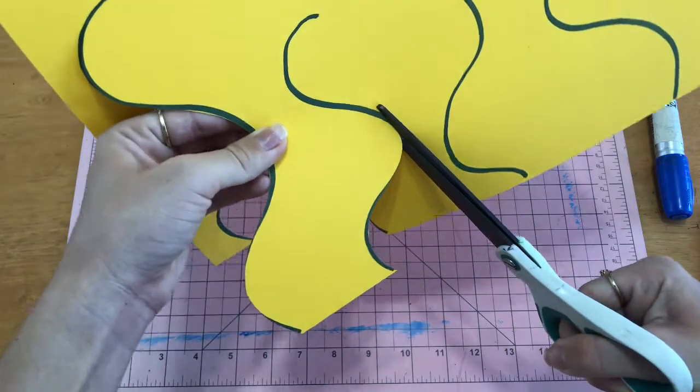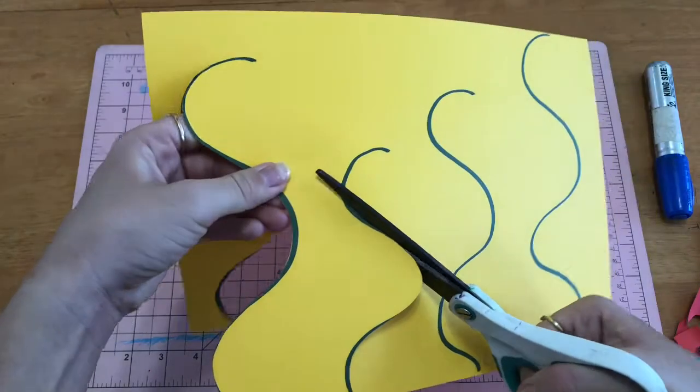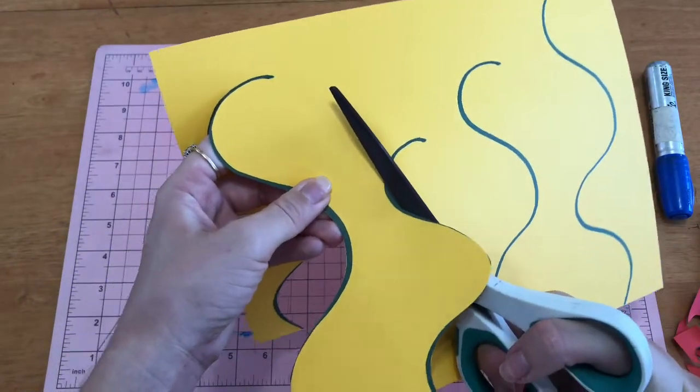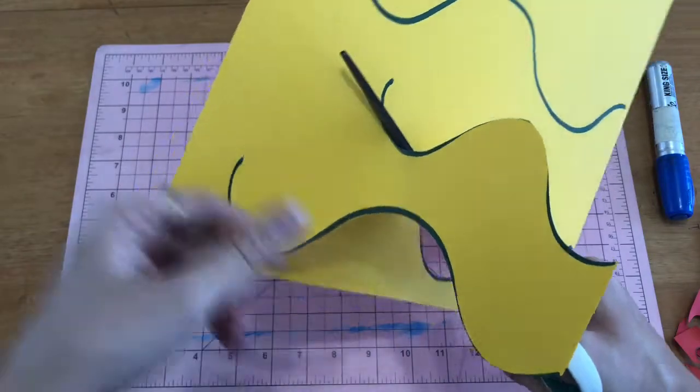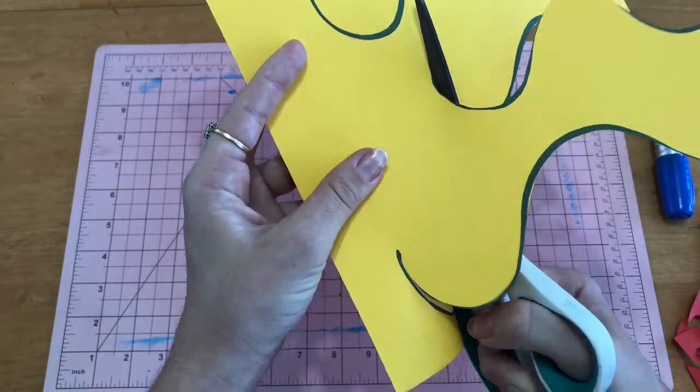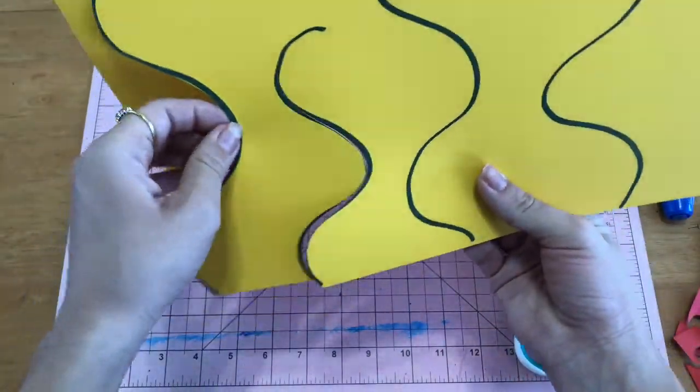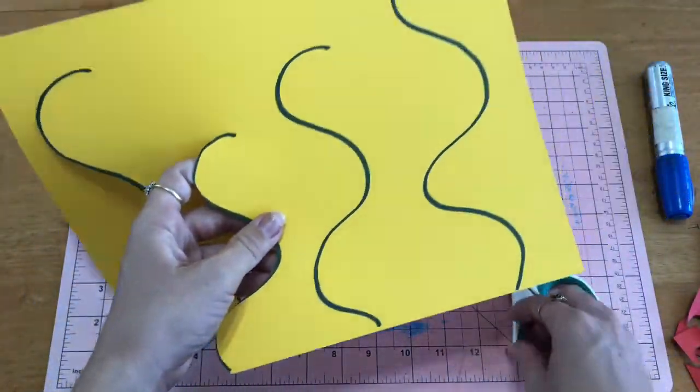We don't want to go off the line, do we? Keep going. Turn that scissors and that paper. That one was nice. Easy peasy Japanese lemon squeezy.